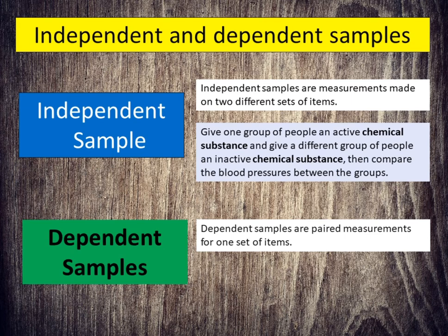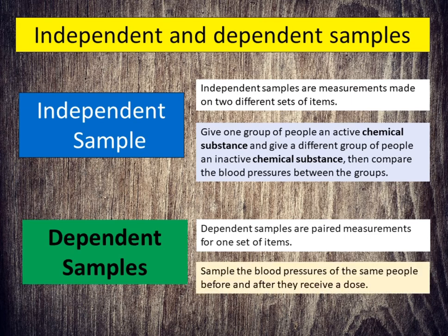Furthermore, dependent samples are paired measurements for one set of items. For example, sample the blood pressures of the same people before and after they receive a dose.